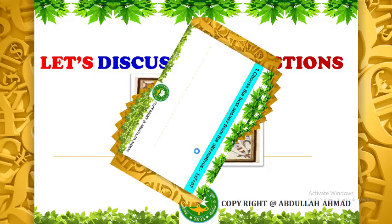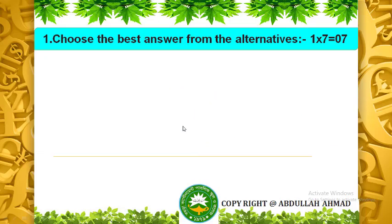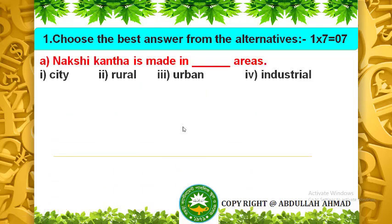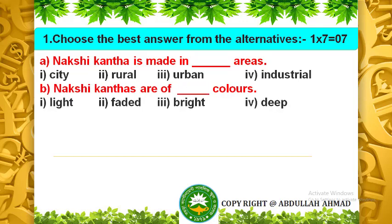Now I will discuss MCQ questions. Choose the best answer from the alternatives. Question A: Noxikatha is made in which areas? The options are city, rural, urban and industrial. The correct answer is rural. Question B: Noxikathas are of which colors? The options are light, faded, bright and deep. The answer is bright.